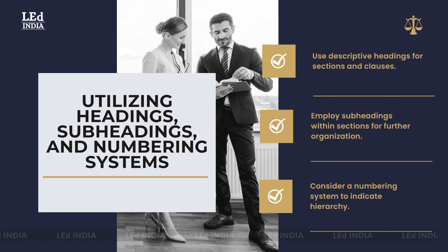Utilizing Headings, Subheadings, and Numbering Systems. Headings, subheadings, and numbering systems play a crucial role in guiding readers through the contract and aiding in comprehension. Utilize descriptive headings for each section or clause to provide an overview of its content. Subheadings can be used within sections to further divide and organize the content. Consider using a numbering system to indicate the hierarchy of provisions, making it easier for readers to navigate through the contract. Bold and distinguish these headings and subheadings to draw attention to them and provide visual cues.